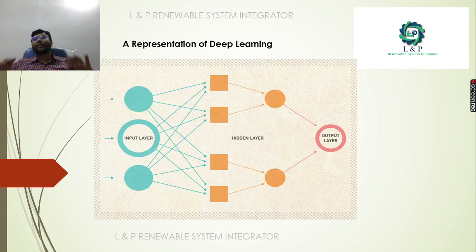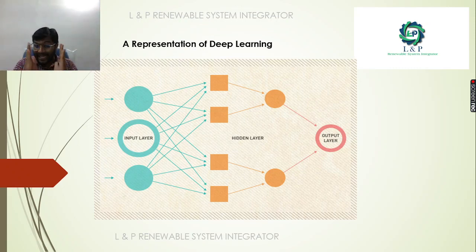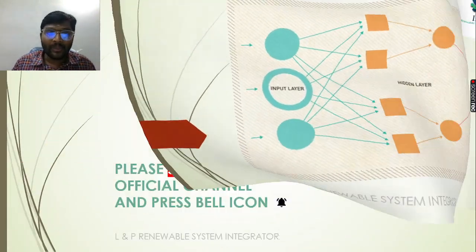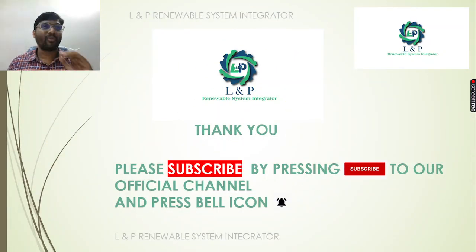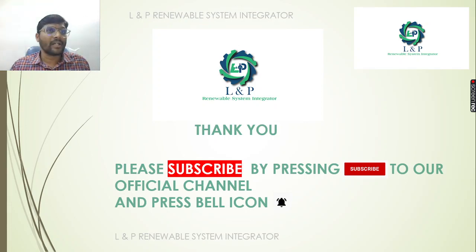In deep learning, the representation has an input layer and an output layer with hidden layers in between — this is the core representation of a deep learning model. Thank you so much. Please subscribe and press the bell icon if you found this video useful, and share it with your friends if you learned some basics about data science.